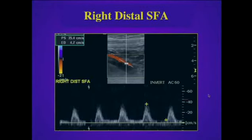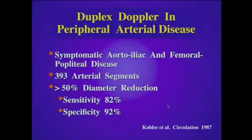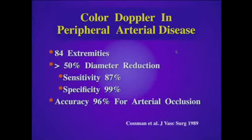Let's review studies that have looked at the utility of duplex and color Doppler in the evaluation of peripheral arterial disease. One of the earliest studies was published in 1987 in Circulation by Kohler and his group, using grayscale and duplex Doppler before the advent of color Doppler. They found a sensitivity of 82 percent and specificity of 92 percent for the detection of significant stenosis, defined as greater than 50 percent diameter reduction. In a study published in the Journal of Vascular Surgery, Kossman and his group utilized color Doppler and found a sensitivity of 87 percent, specificity of 99 percent for significant stenosis, and accuracy of 96 percent for identifying arterial occlusion.